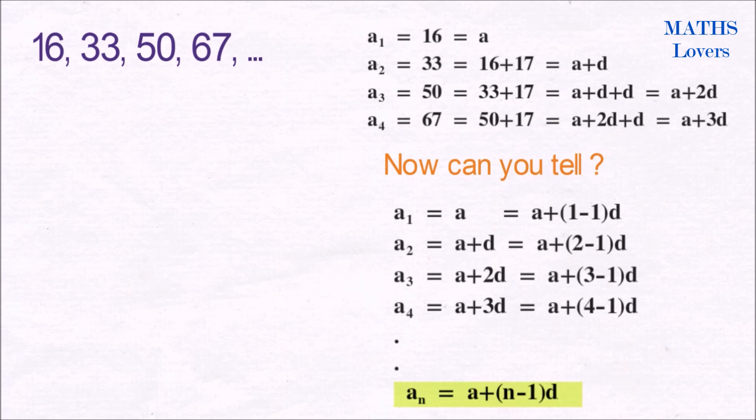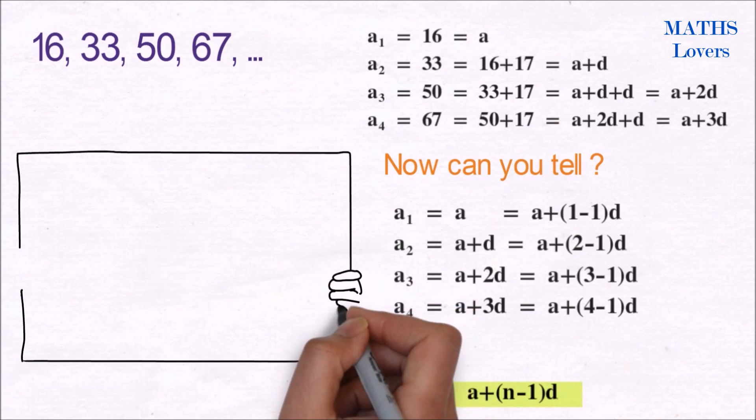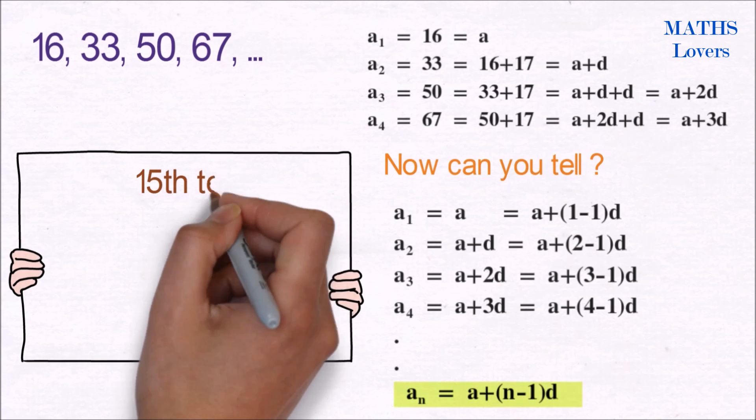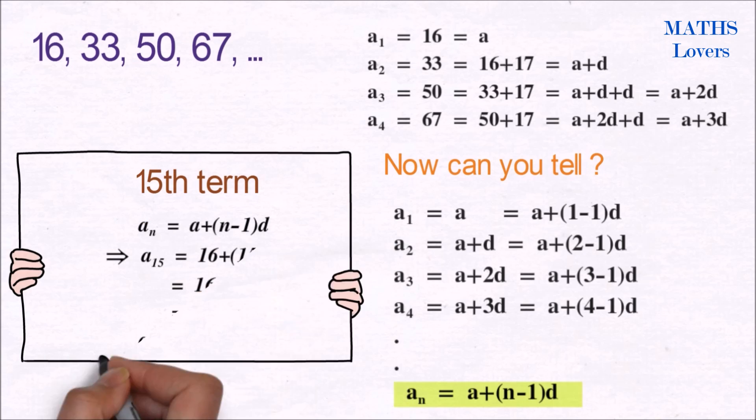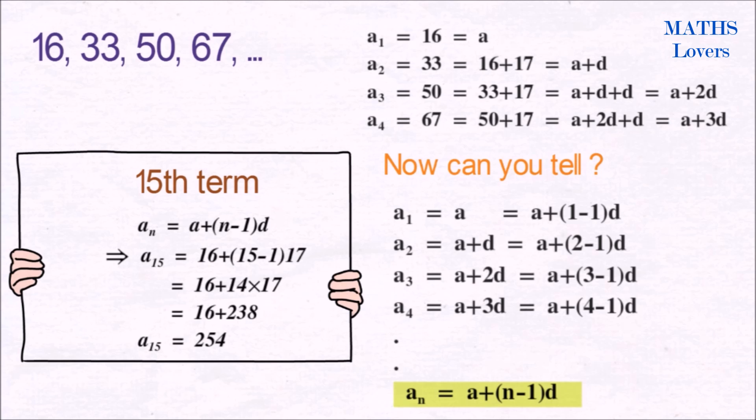Where a is the first term, n is the nth term, and d is the common difference. Now let's find the 15th term using this formula. So here a equals 16, d is 17, and n equals 15. That's why a_15 equals 254. Like this we can find out the nth term of any AP.